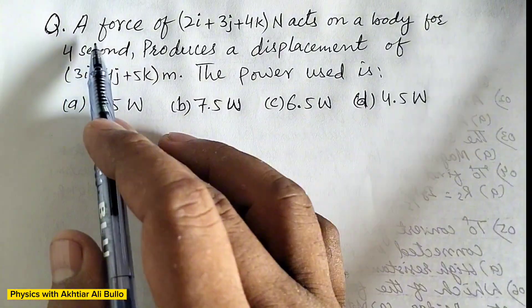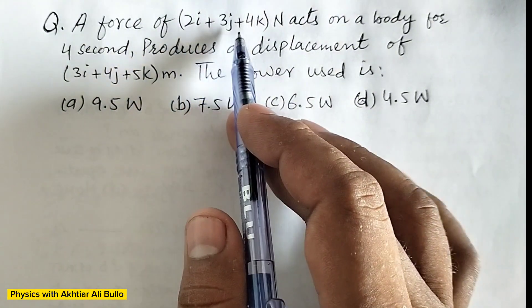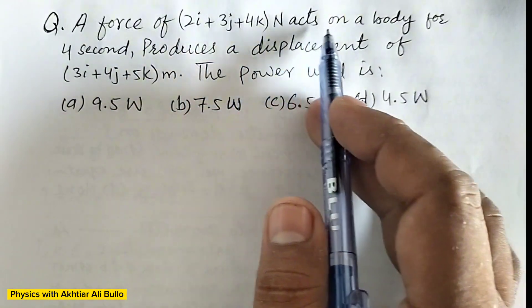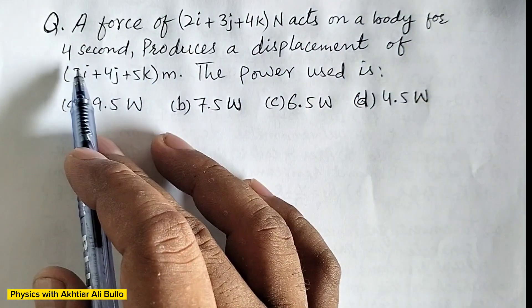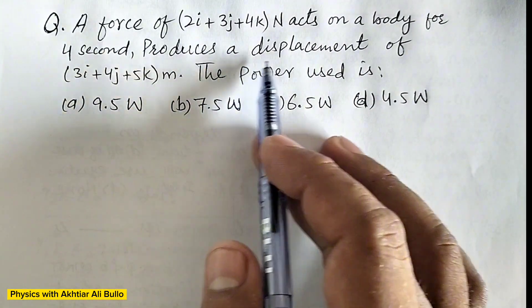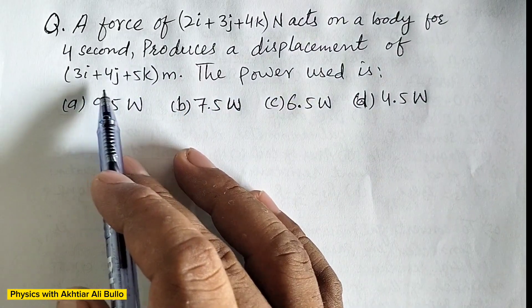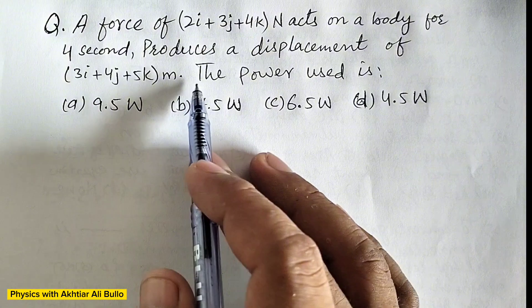The question is, a force of 2i plus 3j plus 4k newton acts on a body for 4 seconds produces a displacement of 3i plus 4j plus 5k meter.